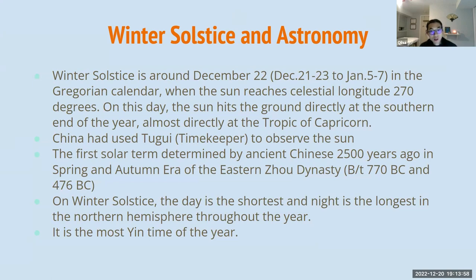The winter solstice is actually the first solar term among all the solar terms. It was determined by ancient Chinese approximately 2,500 years ago, in the Spring and Autumn era of the Eastern Zhou dynasty. On the day of winter solstice, the day is the shortest and the night is the longest in the northern hemisphere throughout the year. However, in the southern hemisphere it is totally the opposite — it is the summer solstice, which has the longest day and the shortest night.